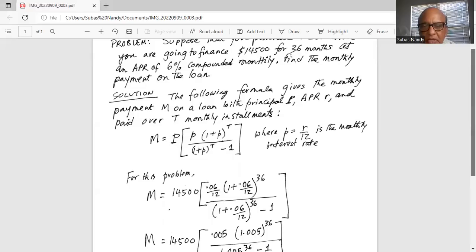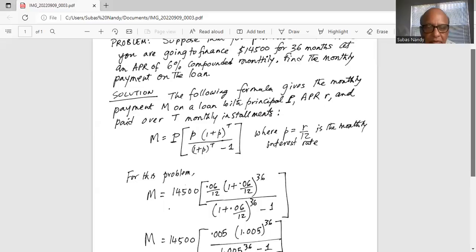What is small p? It is equal to R over 12, the monthly interest rate.